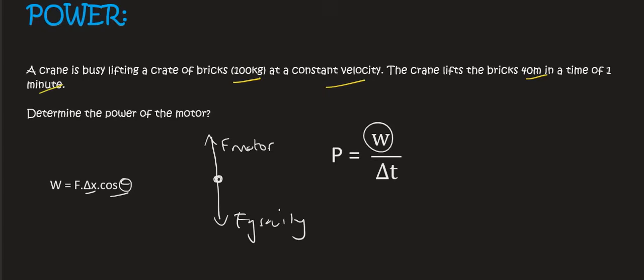Now because we are moving at a constant velocity, it means that those two forces must be balanced. And so the motor will be the same as the force of gravity, which is just the mass times by 9.8. And that's going to give us 980 newtons.